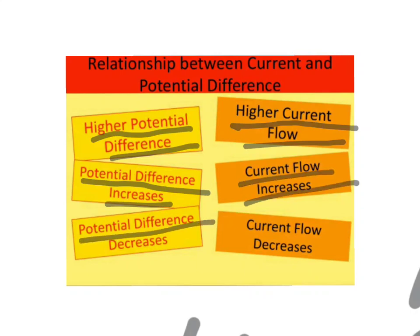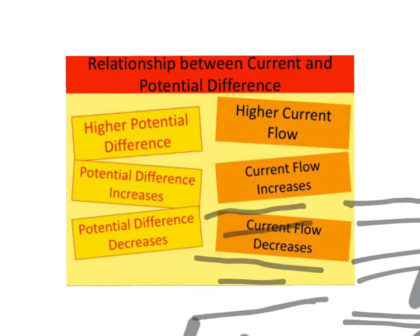Higher the potential difference, higher will be the flow of current. If potential difference decreases, the pressure across the two terminals decreases, and the current will also decrease. So higher the voltage or potential difference, higher will be the flow of current.